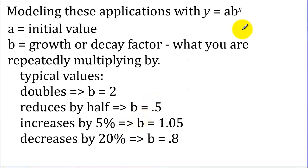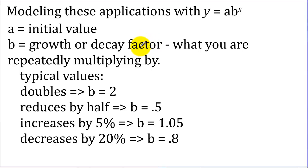When modeling an example, we write an equation using this model. We need to figure out the value of a, which is the initial value or the y-intercept, and b will be a growth or decay factor determined from the words in the problem. It's a repeated multiplication. For something like cell division where cells double, the b value will be 2.